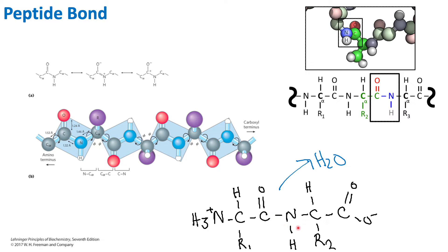We see this bond form between the carboxyl and the amino end of two amino acids to get the peptide bond. It's important to note the configuration of this bond: the oxygen points up and the hydrogen points down. This is the trans configuration, and it is important to draw correctly because whenever we see peptide bond formation, this is exactly how it should be illustrated.